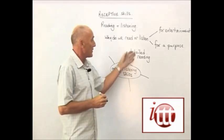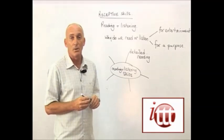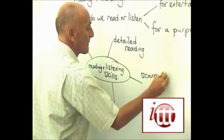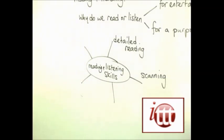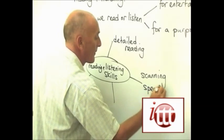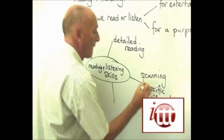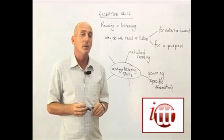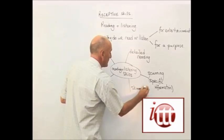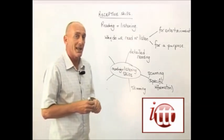Now, unfortunately, most of us don't get our video cameras working straight away because we don't do that detailed reading. We tend to do something which is slightly quicker, which is called scanning. In scanning, what we're trying to do is to look for specific information. The other type of quick reading that we do is something called skimming, and what we're doing in skimming is we're trying to get a general overview of what the text is actually saying.